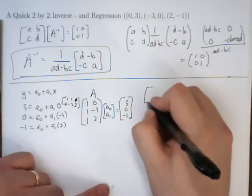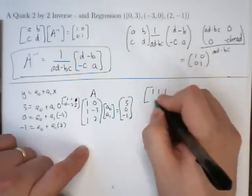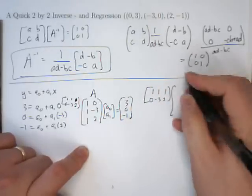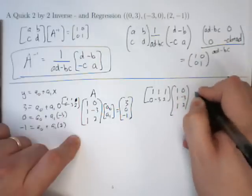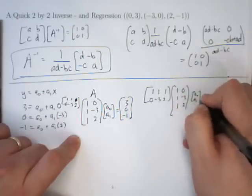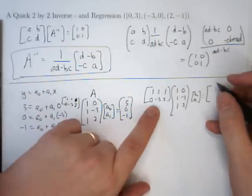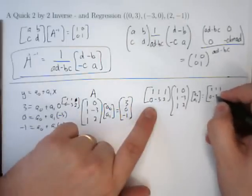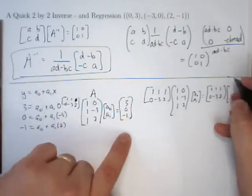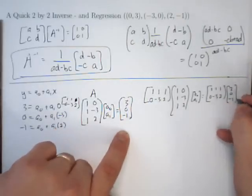So, let's just write that out. We've got 1, 1, 1, 0, minus 3, 2 times 1, 1, 1, 0, minus 3, 2. We've got our A0, our A1. And that needs to be, if I multiply on the left on one side, I better do the same thing over here. 0, minus 3, 2. And then I've got the 3, 0, negative 1.